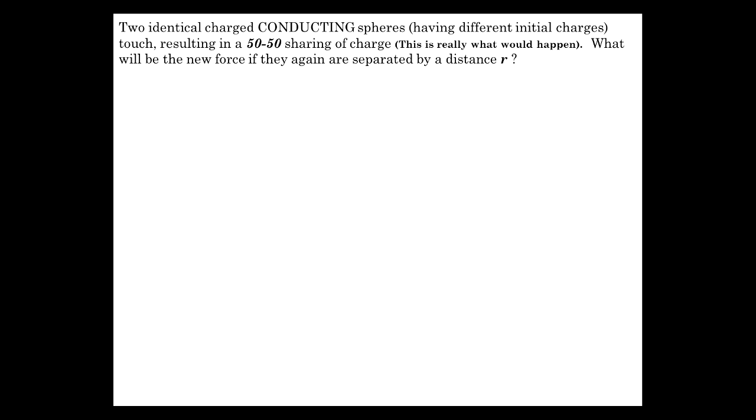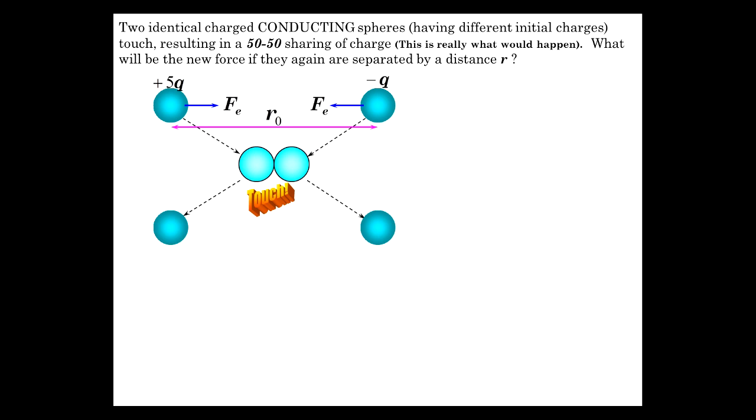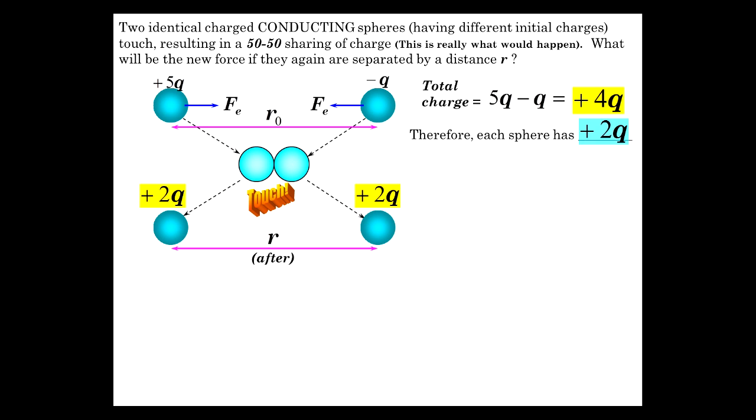I want to now consider having two conducting spheres, and they're going to touch. When they touch, it results in a 50-50 sharing of their charge. Then they're going to separate, so what's the new force after they touch together and separate? We have 5Q and negative Q to begin with. When they touch, they're going to share the total charge equally. What is the total charge? We have plus 5 minus 1Q is 4Q. So that's the total. So each sphere has 2Q. Plus 2Q on both of them.